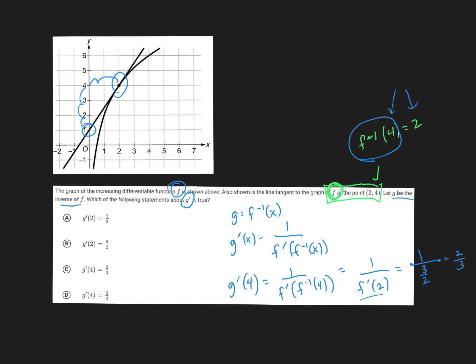So, my statement, then, would be that g prime of 4 is equal to 2 thirds. Now, again, the reason it's not g prime of 2 is because the information we were given here was based on f, and we're asked about f inverse. So, that's plugging in 4 for the x, not 2 for the x. And then the reasoning behind the slopes comes from this argument here.